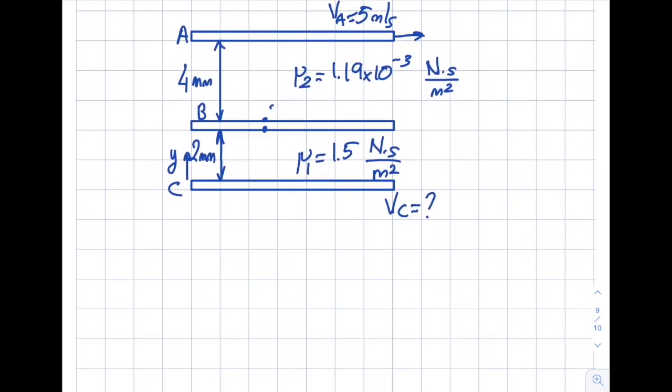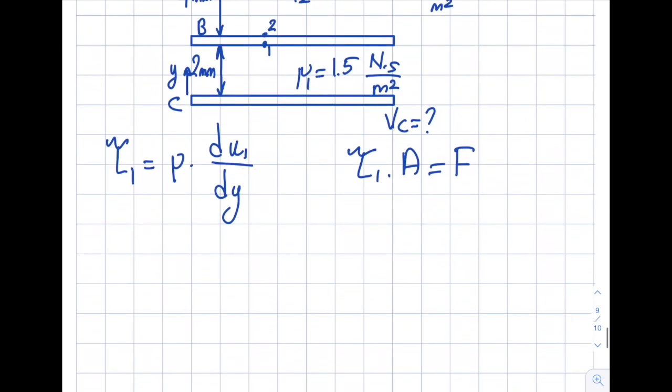Let's call this 2, let's call this 1. So shear stress 1 will be equal to viscosity 1 times du1 dy. And then once I obtain my shear stress, I will multiply by area to obtain the force that I need. For the second fluid, it's the same. It will be the second fluid viscosity times du2 dy.